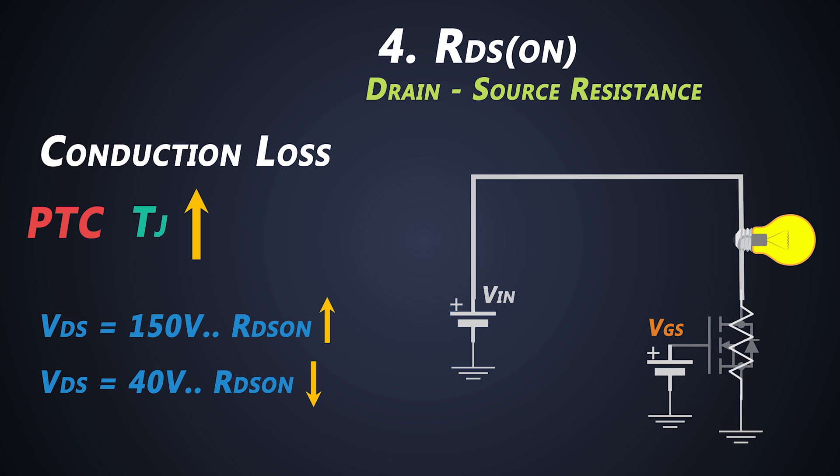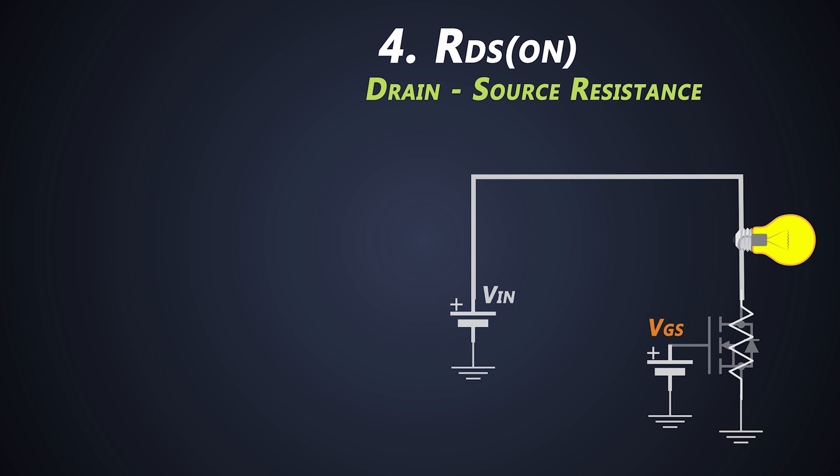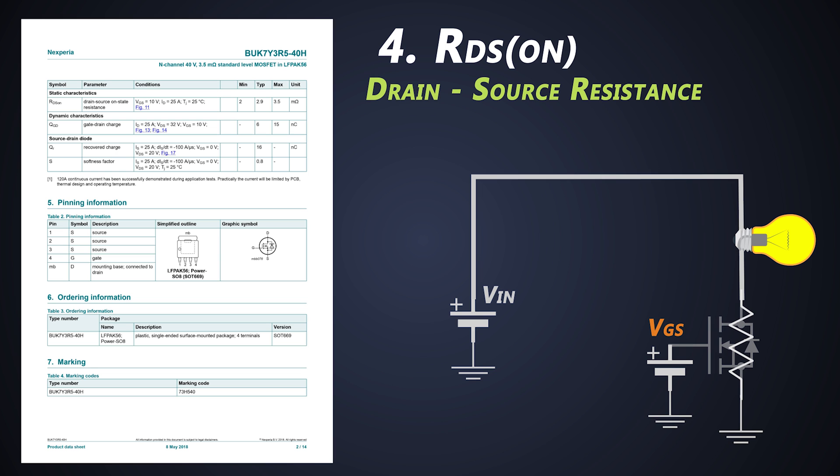The MOSFET is a positive temperature coefficient device. So if the junction temperature of a MOSFET increases, the RDS(ON) also increases. This is the formula to calculate the conduction loss of the MOSFET. Now you see why RDS(ON) is so important.